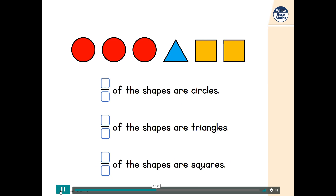Here are some more shapes. This time there are six shapes altogether, so the denominator of our fractions will be six. Three of the shapes are circles, so three sixths of the shapes are circles. There is only one triangle, so one sixth of the shapes are triangles. There are two squares, so two sixths of the shapes are squares.